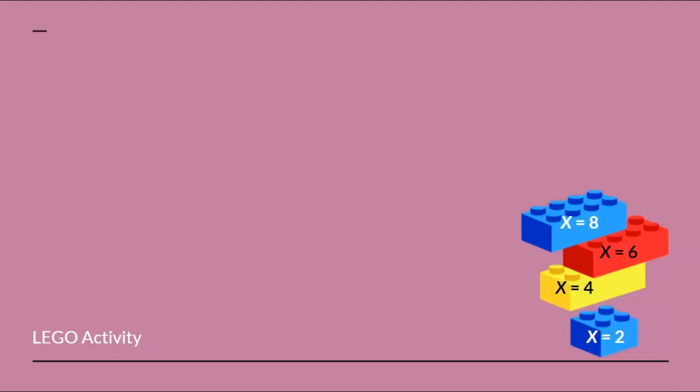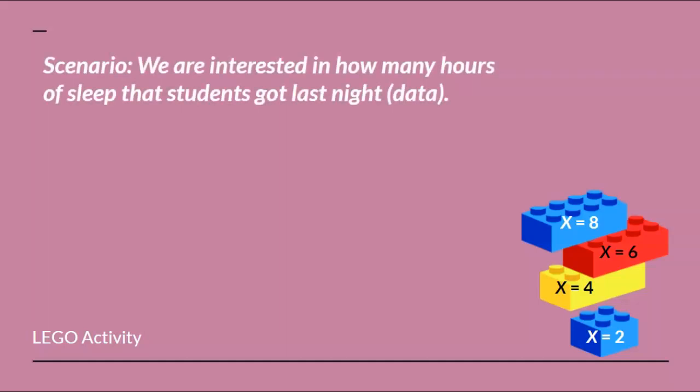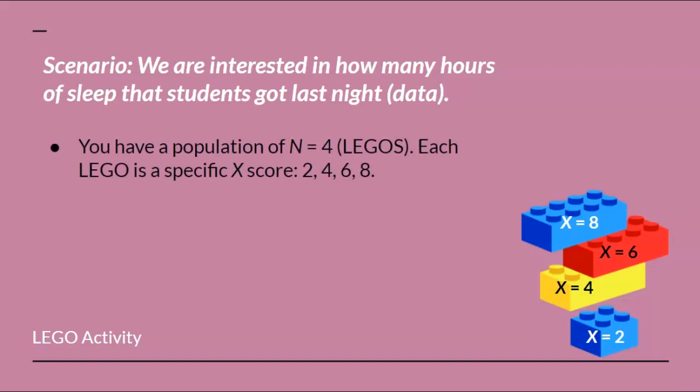In this Lego activity, the research scenario is that we're interested in how many hours of sleep that students got last night. The amount of sleep measured in hours is considered the data, or the X-scores. Imagine that you have a population of n equals 4 students, who are represented by four separate Lego bricks. Each Lego brick represents a specific X-score. One student had X equals 2 hours of sleep. Another student had X equals 4 hours. Another one had X equals 6 hours. And finally, the last student had X equals 8 hours of sleep last night.